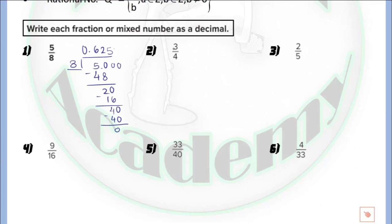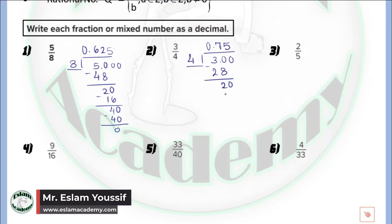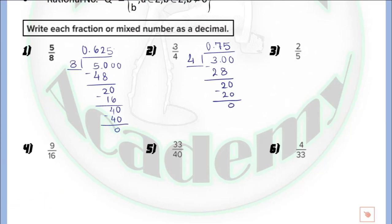In question number 2, we have 3 over 4. Using long division, write 3 divided by 4. 3 is smaller than 4 so we write 0 point, then divide. 30 divided by 4 — the closest number is 7, so 7 times 4 equals 28. By subtraction we get 2. We add 0 and bring it down. 20 divided by 4 equals 5, and 5 times 4 equals 20. By subtraction we get 0. So 3 over 4 in decimal form equals 0.75.